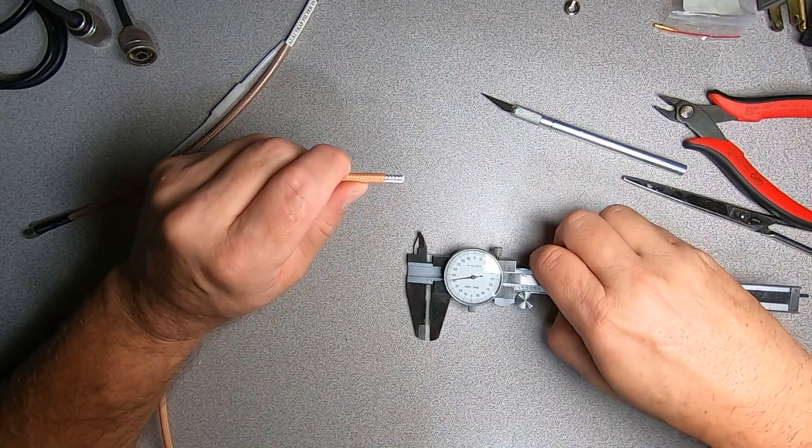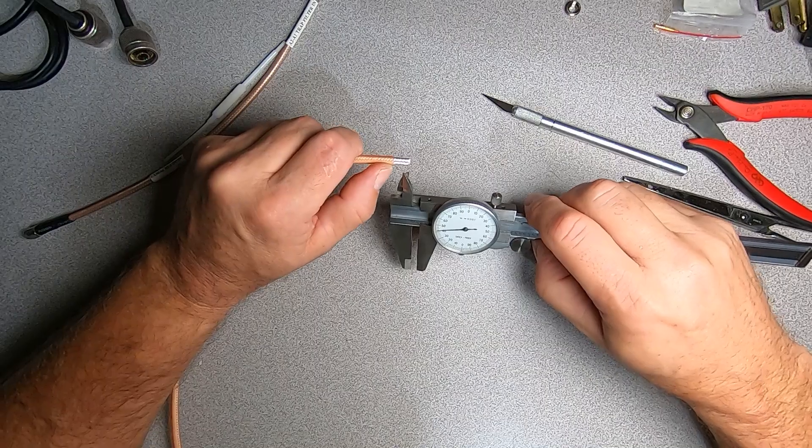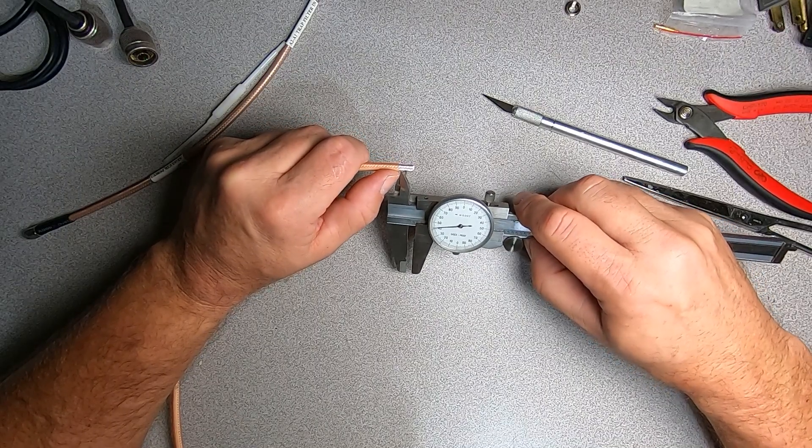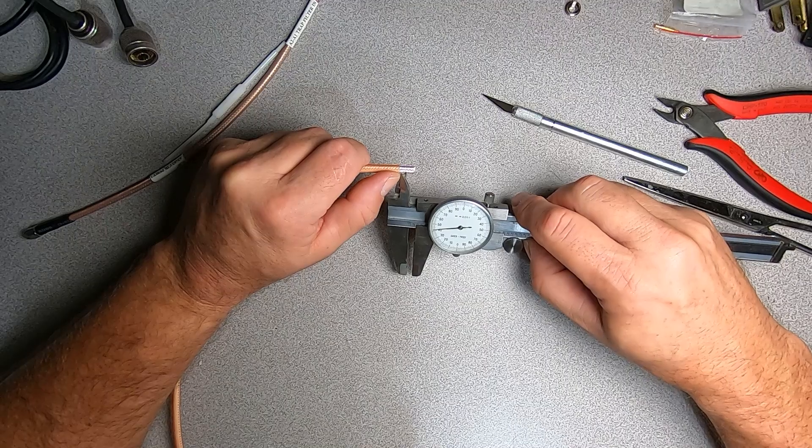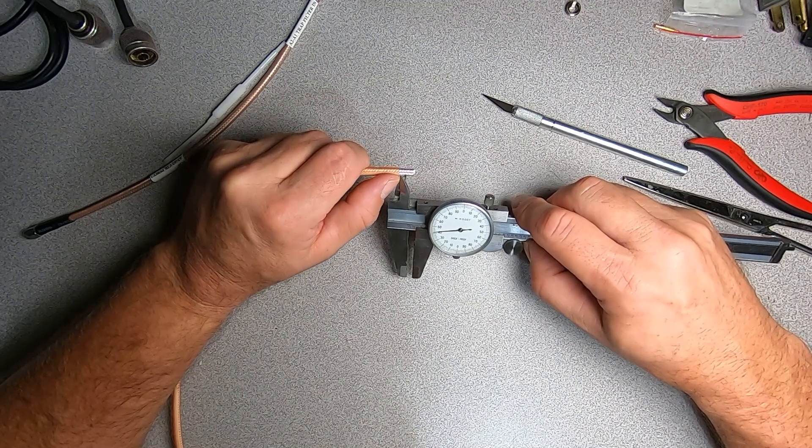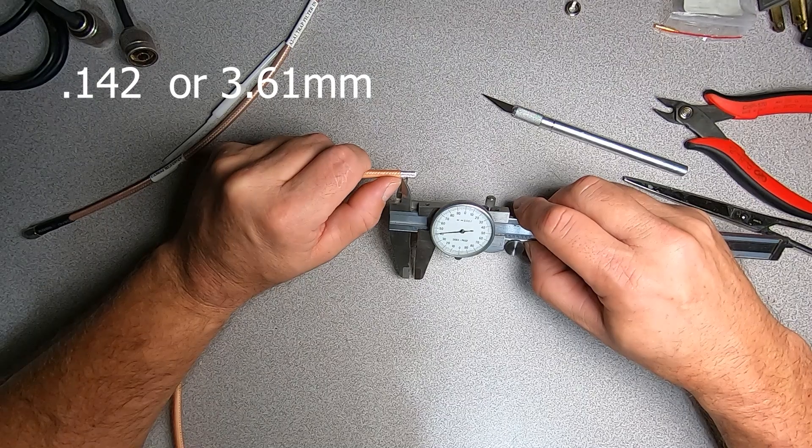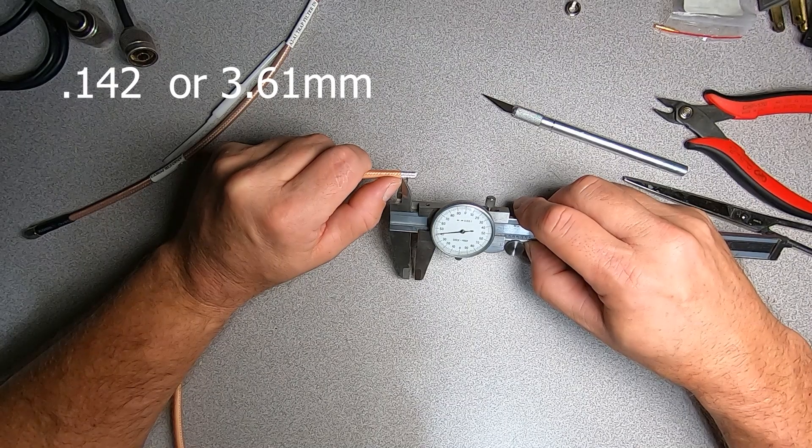Our next dimension we're working with is indexed, where you cut your insulation off, and that is removing the shield, the insulation for the center conductor, exposing only the center conductor to a dimension of 0.142.